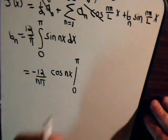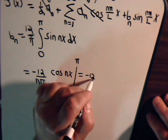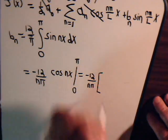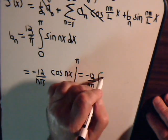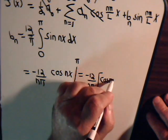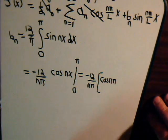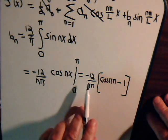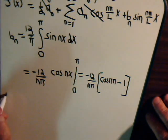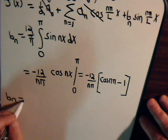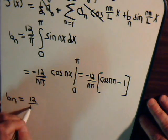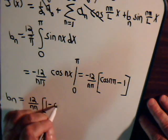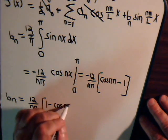So, this will equal minus twelve over n times π times the cosine of n π. And when x is zero to π, and when x is zero, we have the cosine of zero, which is one. And let's get rid of this, let's multiply through. So, we'll have b sub n will equal twelve over n π times one minus the cosine of n π.